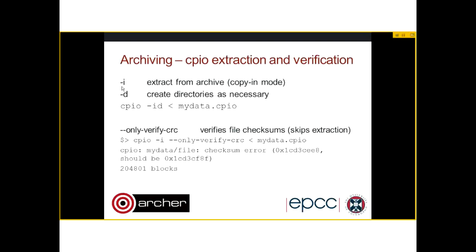Extracting with cpio is done with the -i flag (copy in mode). You'll probably want to combine that with -d, which tells it to create directories and subdirectories as needed, keeping the same folder structure. cpio takes its input from standard in, so you'll need to redirect the file accordingly. Verifying an existing archive is easier than with tar if you use the CRC format, which stores checksums. You can use copy in mode with the --only-verify-crc flag, which skips extraction and gives you a report on the status of your files — no un-extracted copy needed. A damaged file will show that its current checksum value does not match the stored expected value.